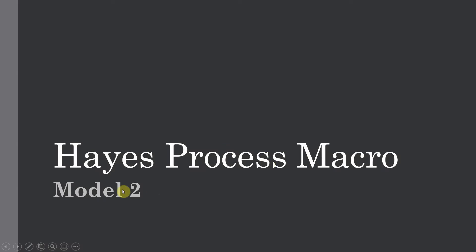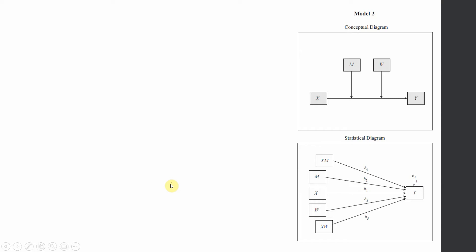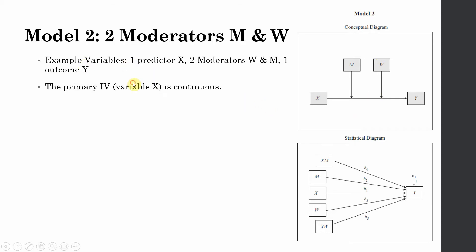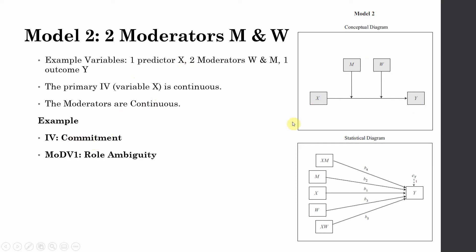Here is PROCESS Macro Model 2. Previously we've done a model with one single continuous moderator. In this example, I'm going to look at what if you've got two different moderators moderating a relationship between X and Y. All these variables are continuous: one IV, one DV, two moderators. The IV is commitment, moderator one is role ambiguity, moderator two is role conflict, and the DV is organizational performance. This is the statistical diagram where the two interaction terms are shown.